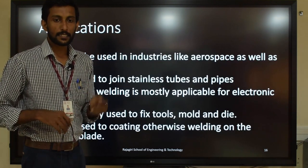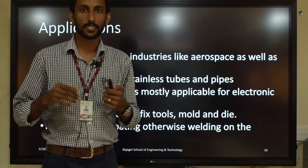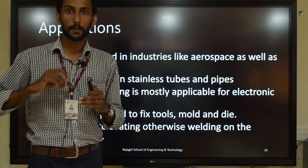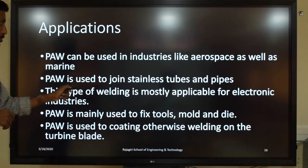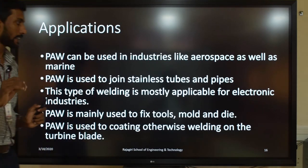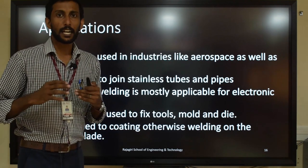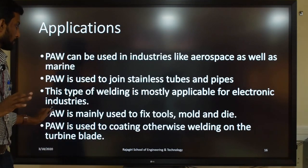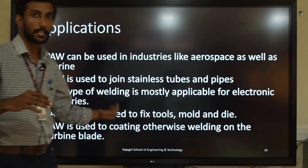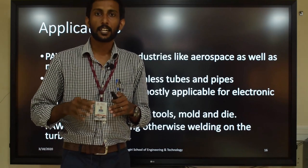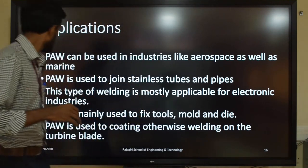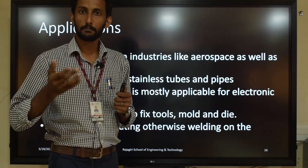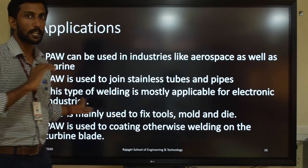Applications of plasma arc welding include aerospace industries and marine applications. It is used for welding turbine blades, stainless tubes and pipes, electronic industries, and tool and die processing. Since the temperature is very high, harder and brittle materials can also be processed. It is also used for coating — for example, the Saturn rocket turbine blades were coated using the plasma coating method — producing a fusible spray at high temperature.